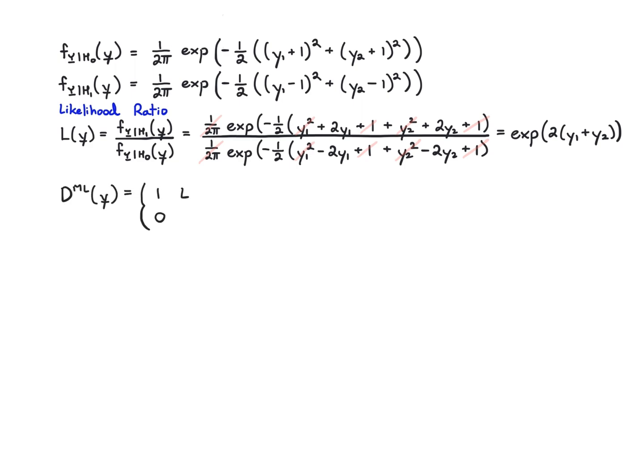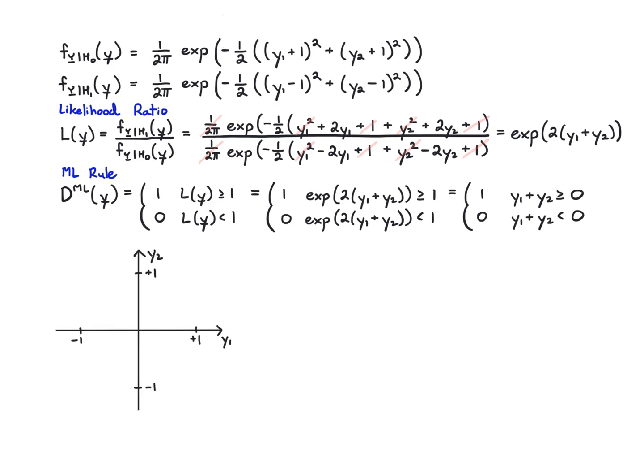So the ML rule, which is the same as the MAP rule in this case, is just comparing this likelihood ratio to 1. Let's write that out. I'm going to plug in this likelihood ratio exp 2 y1 plus y2 compared to 1. So when it's greater than or equal to 1 I decide 1, otherwise 0. And it turns out this is just when y1 plus y2 is greater than or equal to 0 I decide 1, and otherwise I decide 0. Now why is that?